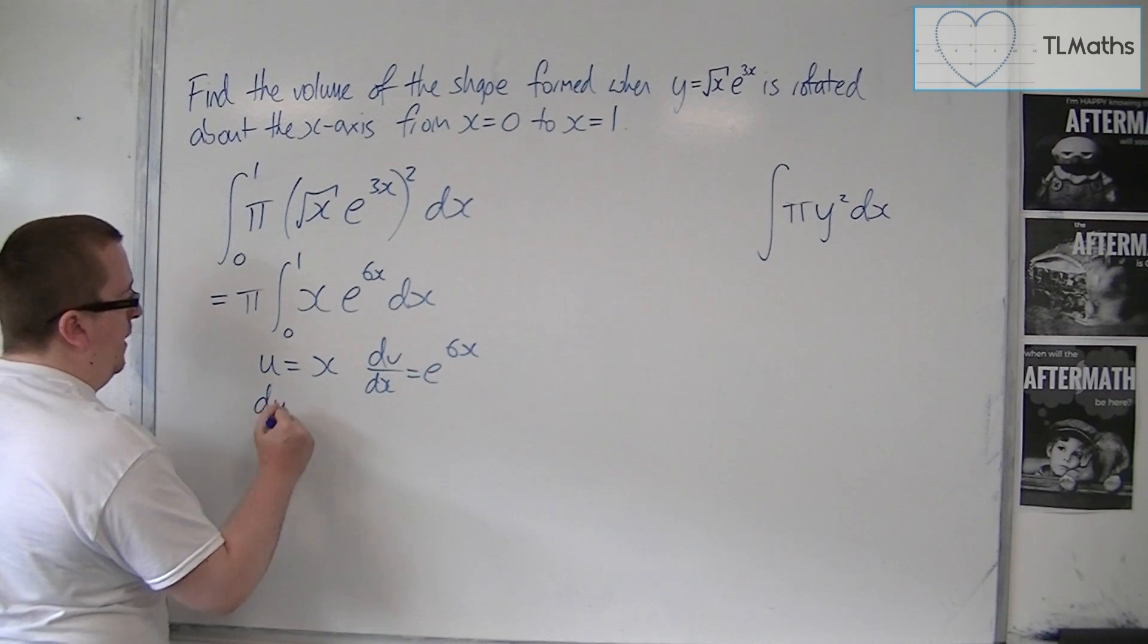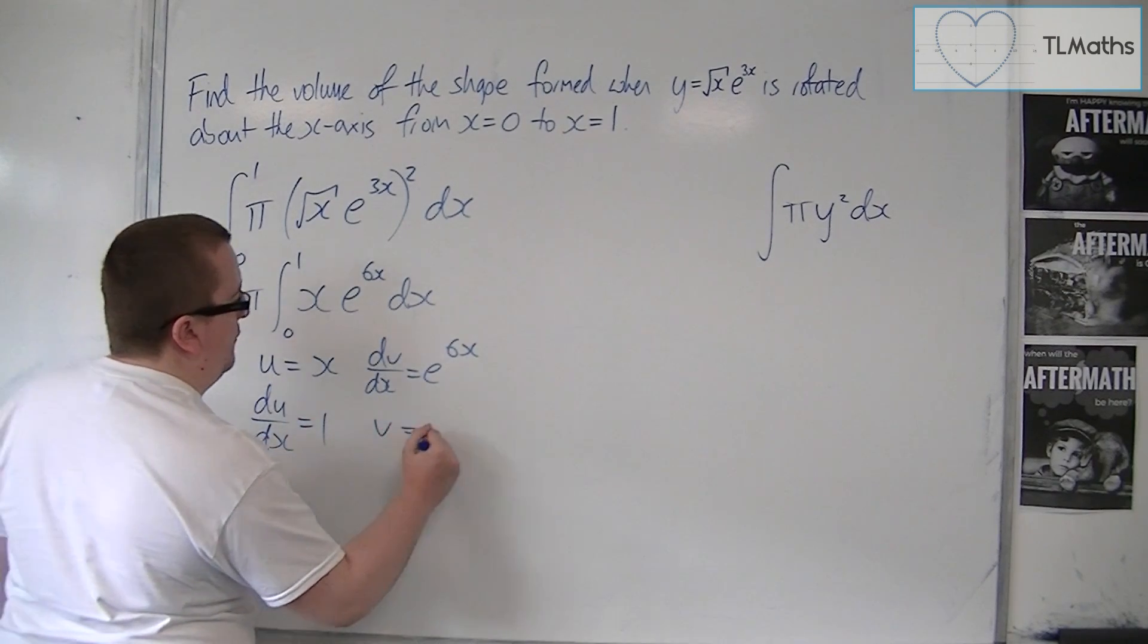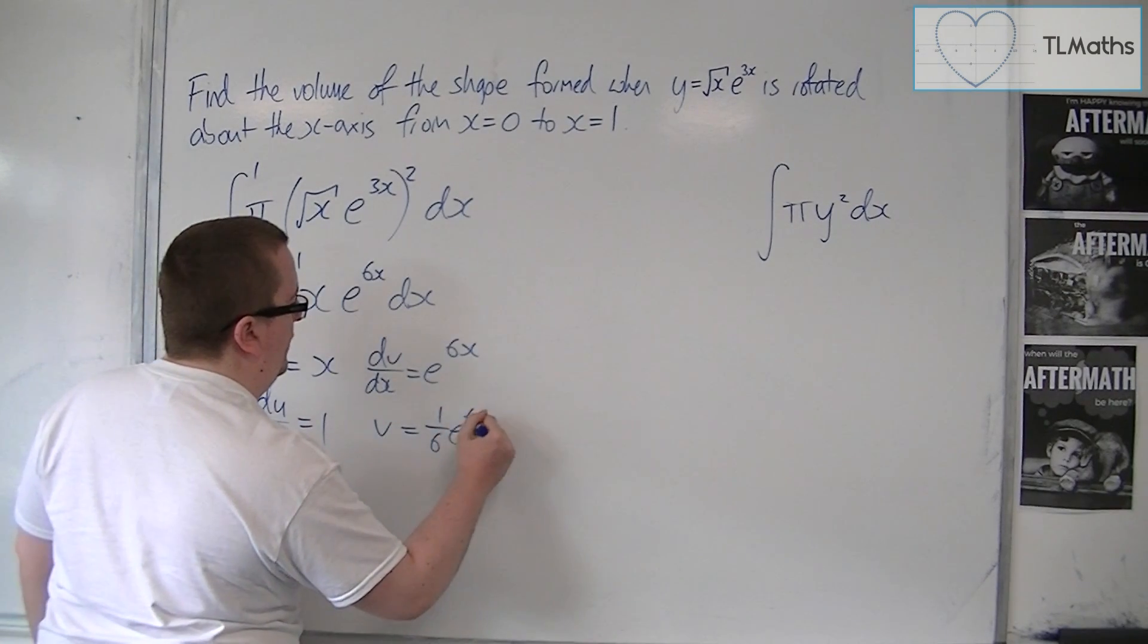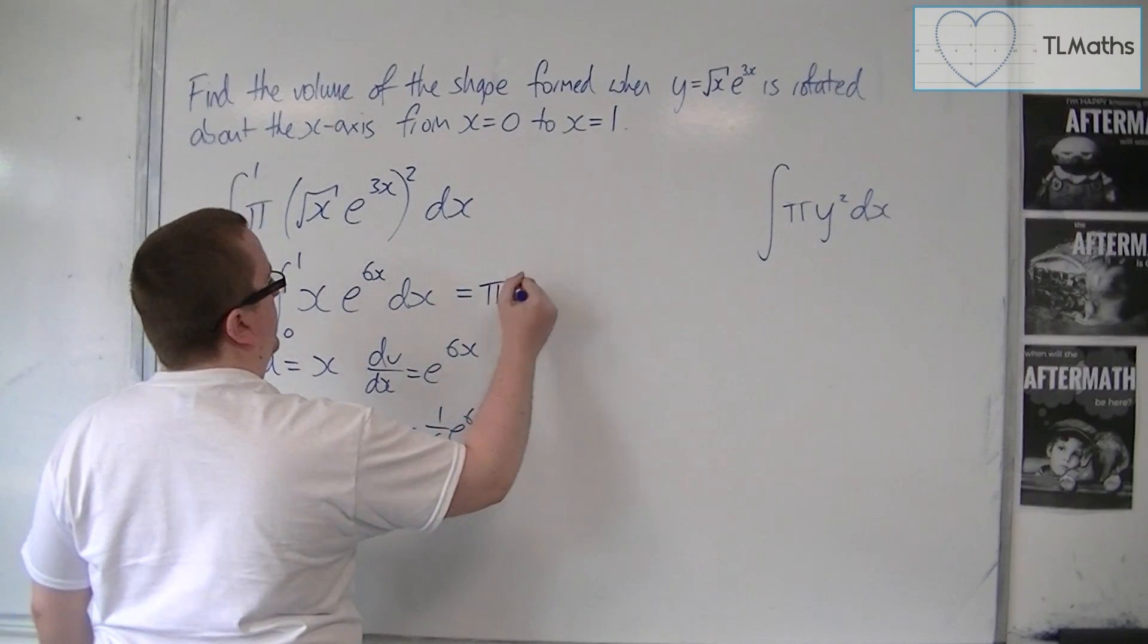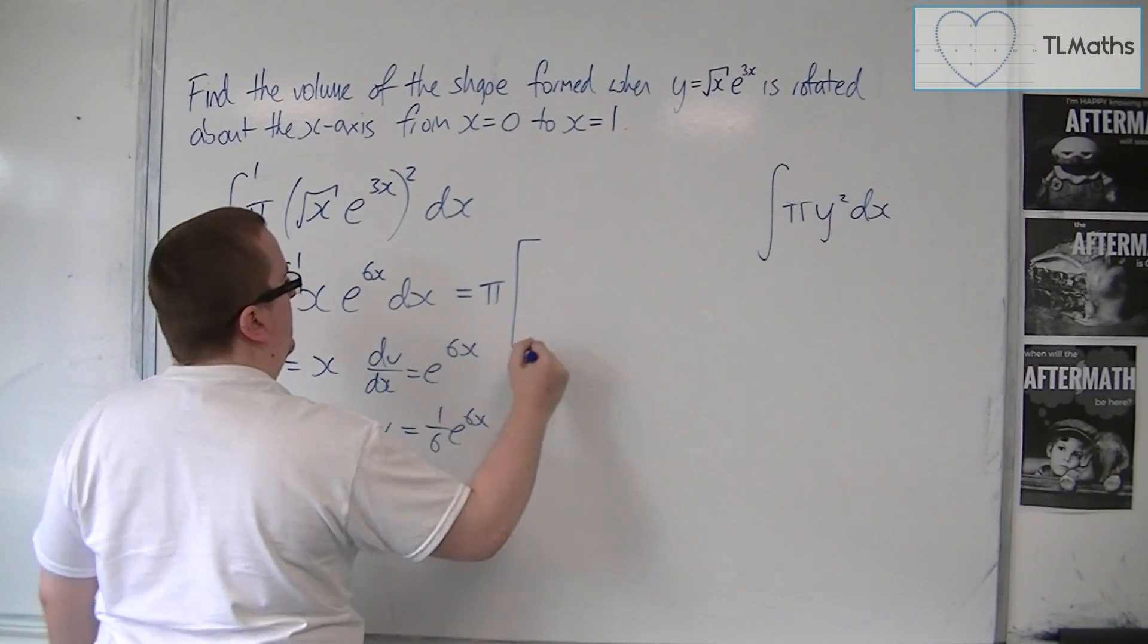So, du by dx is 1, and v is 1 sixth e to the 6x. So, we've got pi times, let's have a big square bracket.